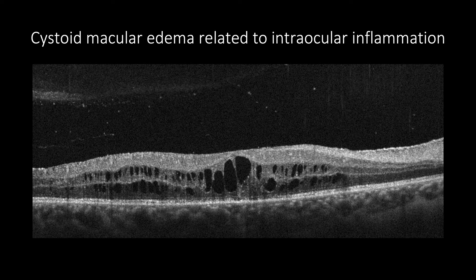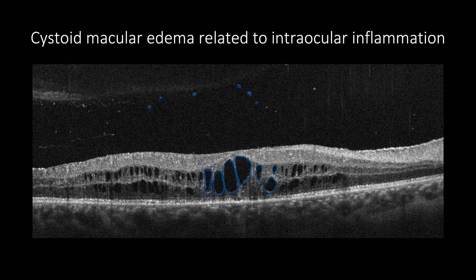In cystoid macular edema related to intraocular inflammation, it may show similar characteristics to pseudophakic cystoid macular edema, such as increased macular thickness and intraretinal cystic changes with or without subretinal fluids. However, cystoid macular edema related to intraocular inflammation may be associated with increased reflective dots in the vitreous due to intravitreal inflammatory cells. Sometimes it can be combined with vitreo-macular interface abnormalities such as an epiretinal membrane.